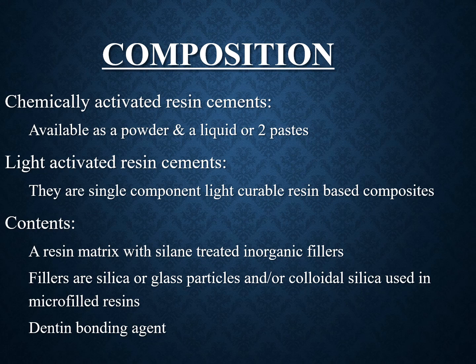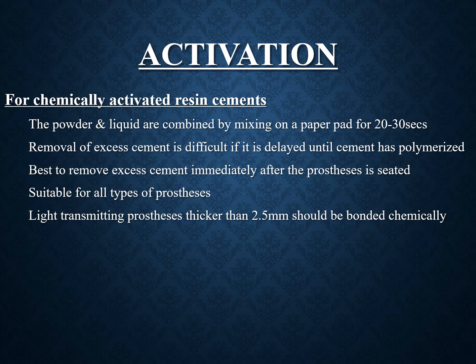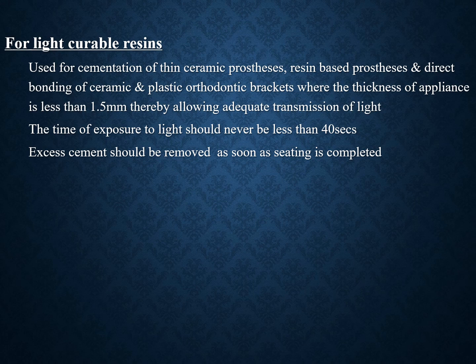For manipulation of chemically activated resin cements: powder and liquid are combined by mixing on the paper pad for 20 to 30 seconds; excess cement is removed immediately after the prosthesis is properly seated. This type is suitable for all prostheses, but those thicker than 2.5 mm should be bonded chemically. Light-curable resins are used for cementation of thin ceramic prostheses, resin-based prostheses, and direct bonding of ceramic and plastic orthodontic brackets where the thickness is less than 1.5 mm, allowing adequate light transmission. Exposure time to light should never be less than 40 seconds; excess cement should be removed as soon as seating is completed.